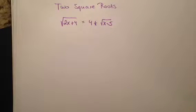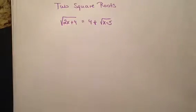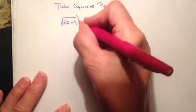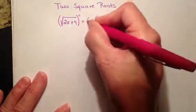I can only do one at a time. So what I want to do is isolate, make sure one of my square roots is off by itself, because then I can square both sides of my equation.